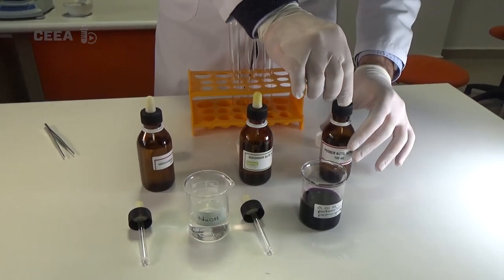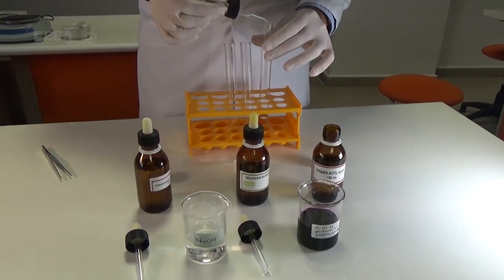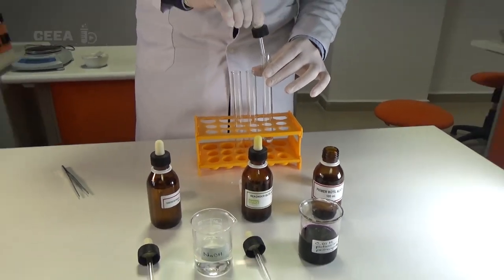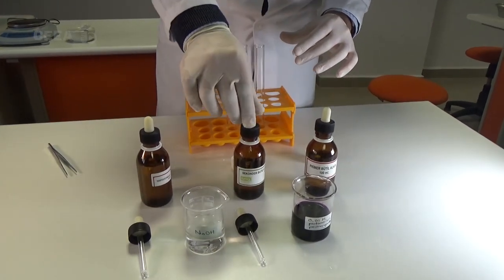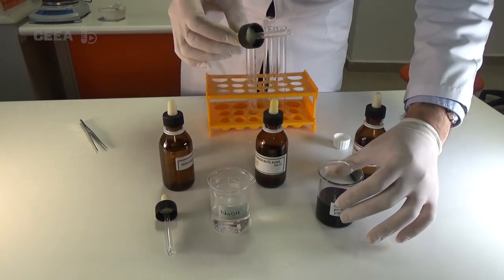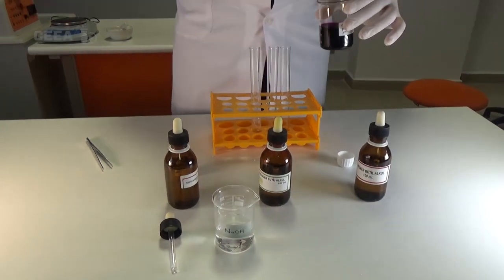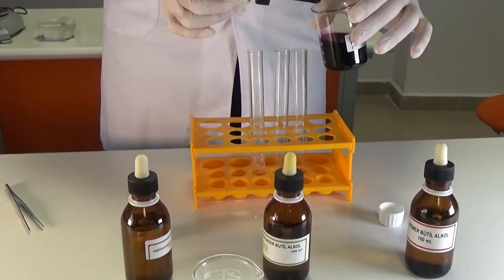Repeat the first step by adding 3 milliliters of butyl alcohol, secondary butyl alcohol, and tertiary butyl alcohol into test tubes. This time, add 1 milliliter of basic potassium permanganate solution and 2 drops of sodium solution into each test tube.